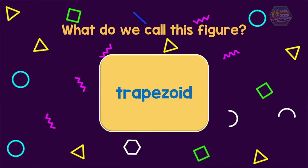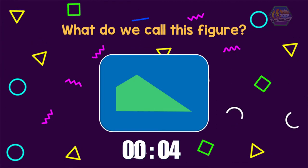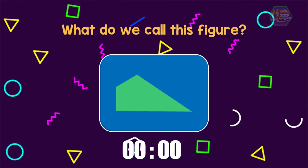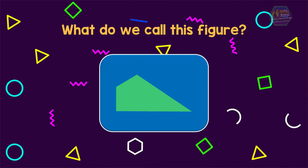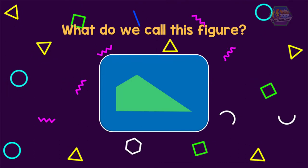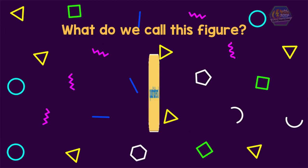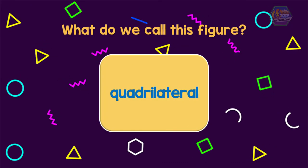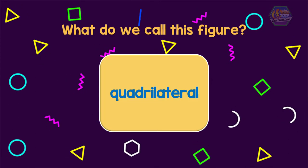For the last exercise, what do we call this figure? As we can see, it has no parallel sides, so let's just call this a quadrilateral. That's it, guys — I hope you learned a lot about quadrilaterals.